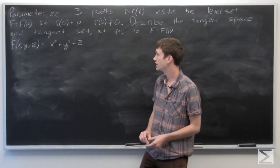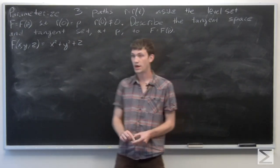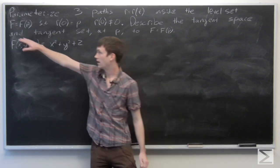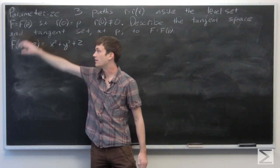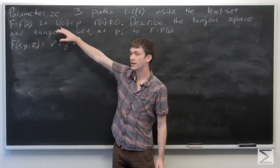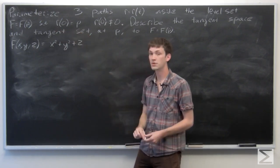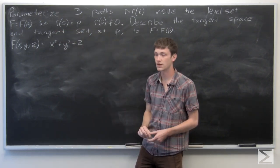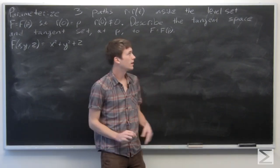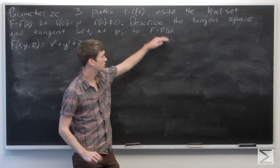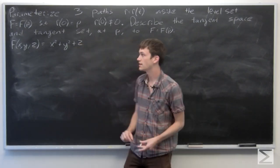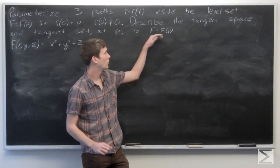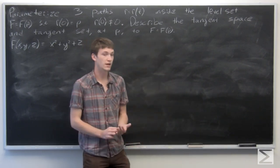In this problem, we're asked to parameterize three different paths inside the level set where f is equal to f of p, such that r of 0 equals p and r prime of 0 does not equal 0. We also want to describe the tangent space and the tangent set at p on the level set where f equals f of p.